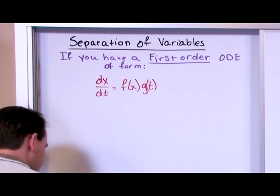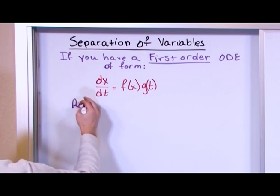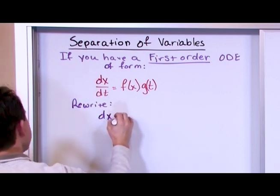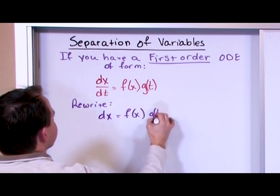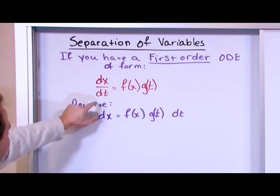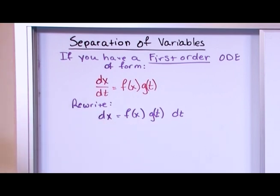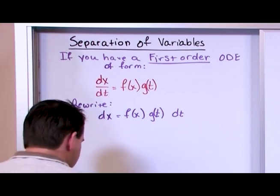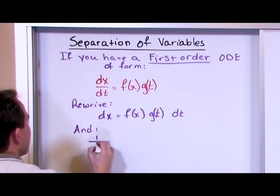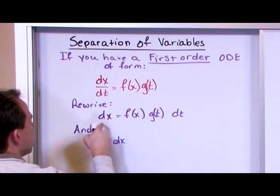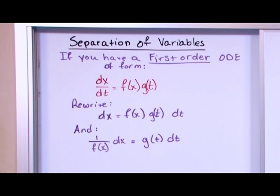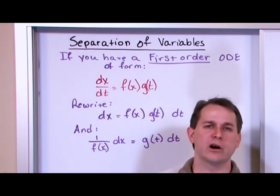Quick example: if you had t squared times dx/dt equals x, this does not look like it's of the right form, but it actually is — because if I divide by t squared I would have dx/dt on the left, and on the right I can write it as x times 1 over t squared. So I have a function of x and a function of t, and the technique can be used.